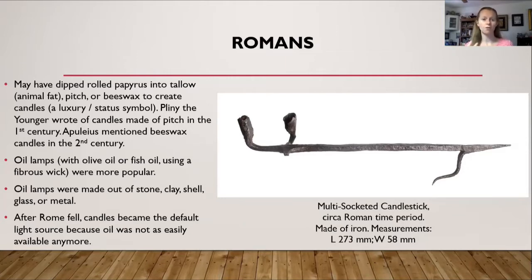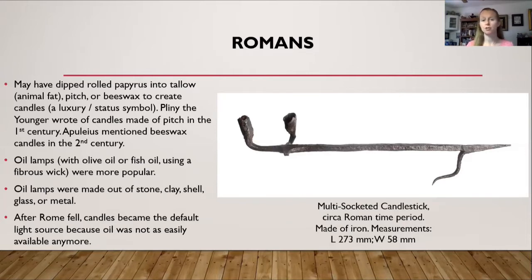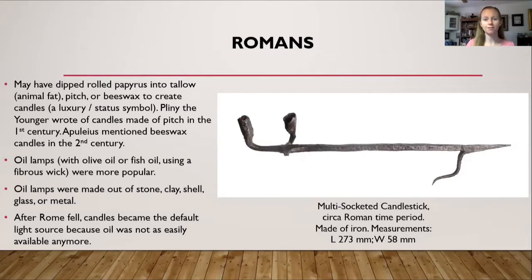Olive oil or fish oil was more easily accessible and also less time-consuming to make. Oil lamps could have been made out of stone, clay, shell, glass, or metal. After Rome fell, candles became the default light source because oil was not as easily available anymore throughout the rest of Europe. On the right-hand side of the page is an example of a multi-socketed candlestick holder.